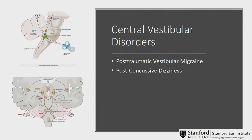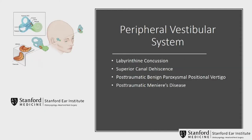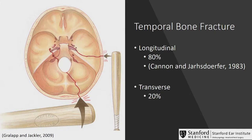We're going to touch on some essential vestibular disorders today, including post-traumatic vestibular migraine and post-concussive dizziness as an overarching concept. We'll also look into discrete peripheral vestibular system entities, including labyrinthine concussions, superior canal dehiscence, post-traumatic BPPV, and post-traumatic Meniere's disease.